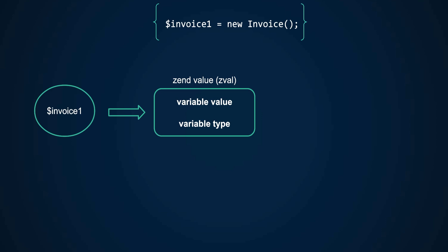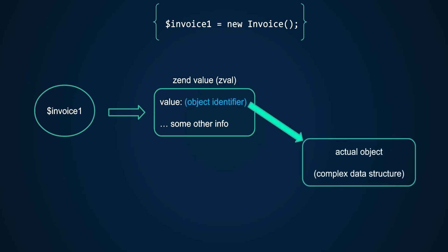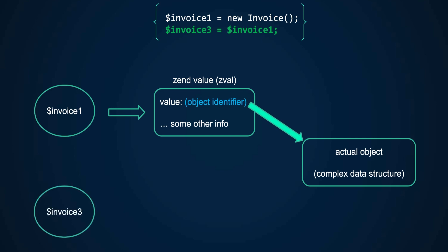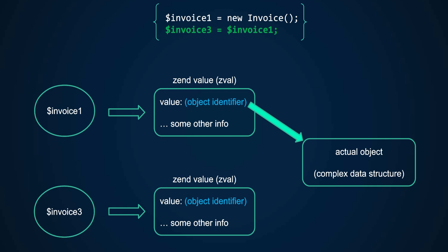The way objects are stored in the zval container differs from simple types like integers, whose values are stored directly in zval. For objects, zval only stores an object identifier — a pointer to another complex data structure called the object store, which contains the actual object. When we assign invoice one to invoice three, a new variable invoice three is added to the symbols table and zval is copied from invoice one, so both zval containers contain the same object identifier, pointing to the same object.